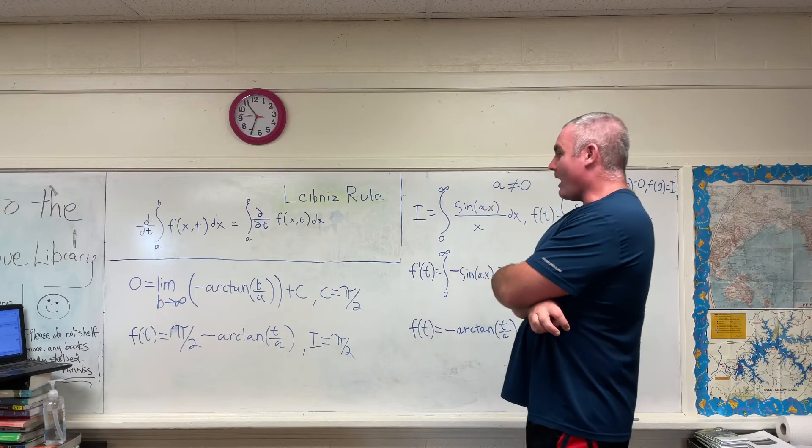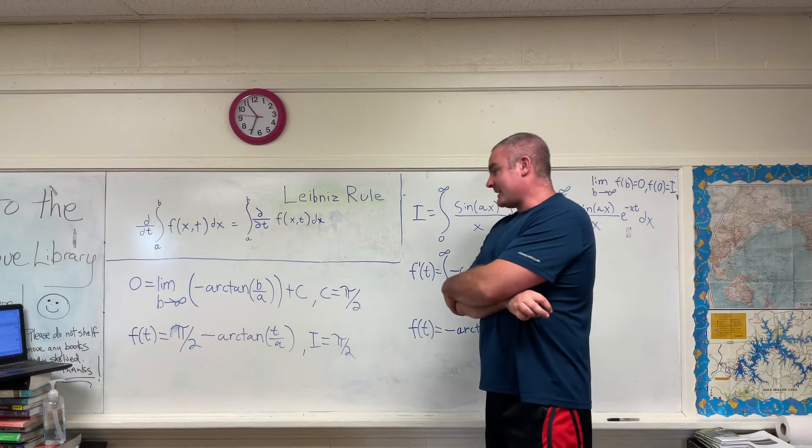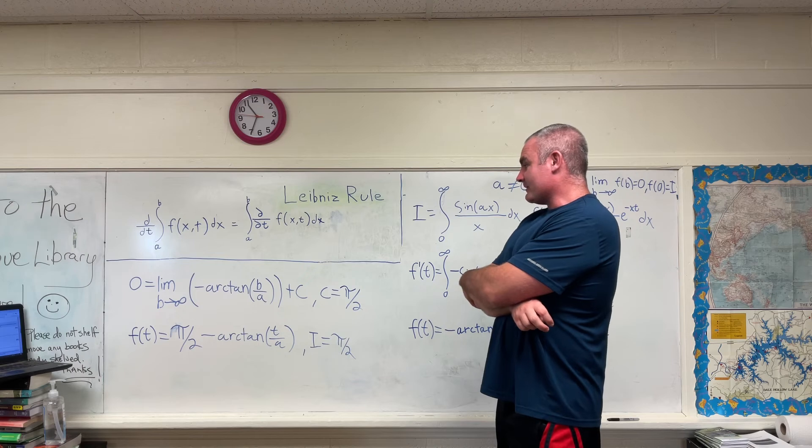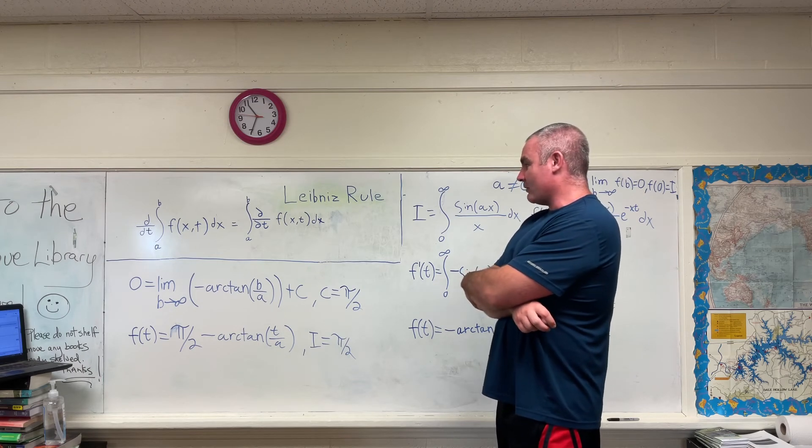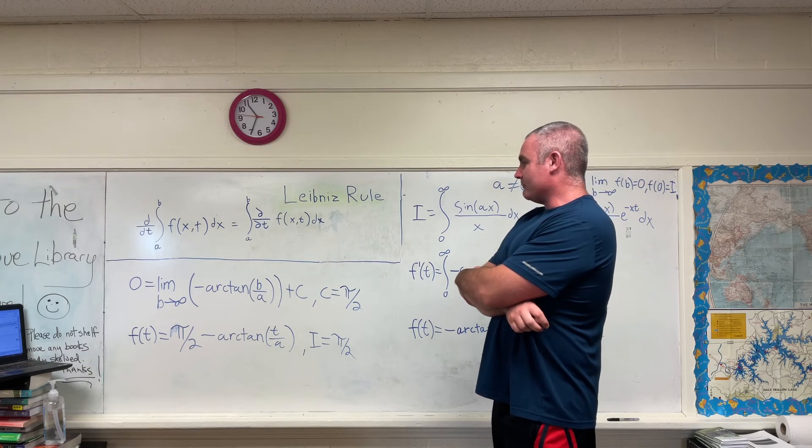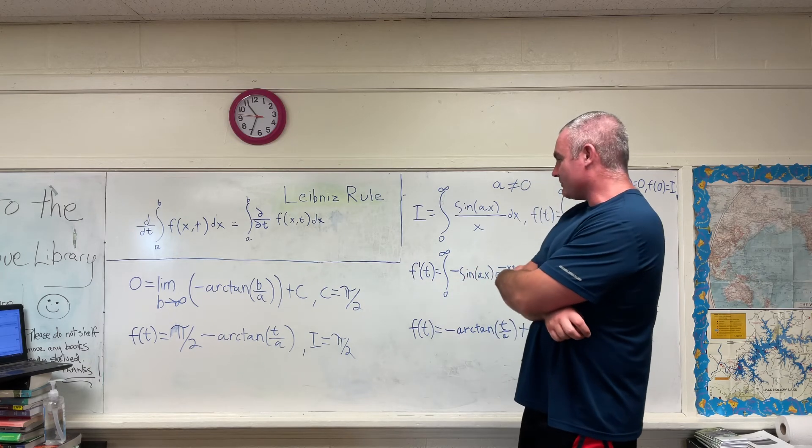I hope you can see why the arc tangent of infinity is pi over two, but we have the negative arc tangent, so it's negative pi over two. Adding it to both sides will give us c is equal to pi over two.